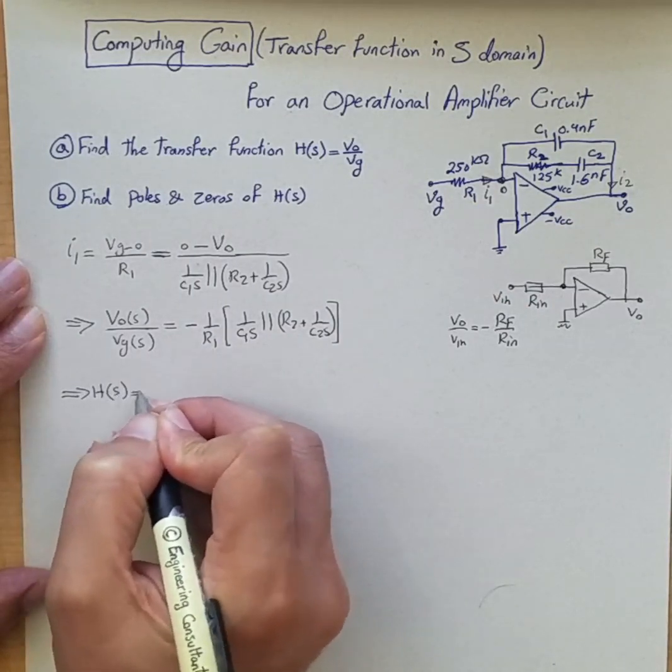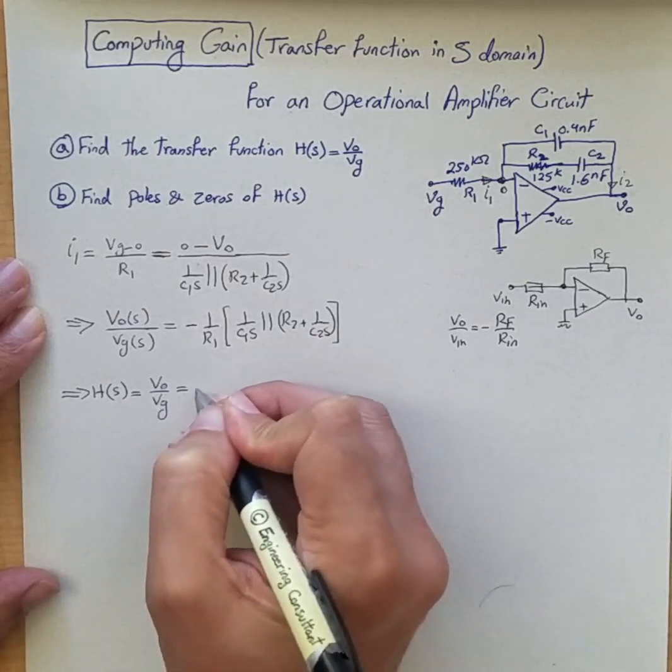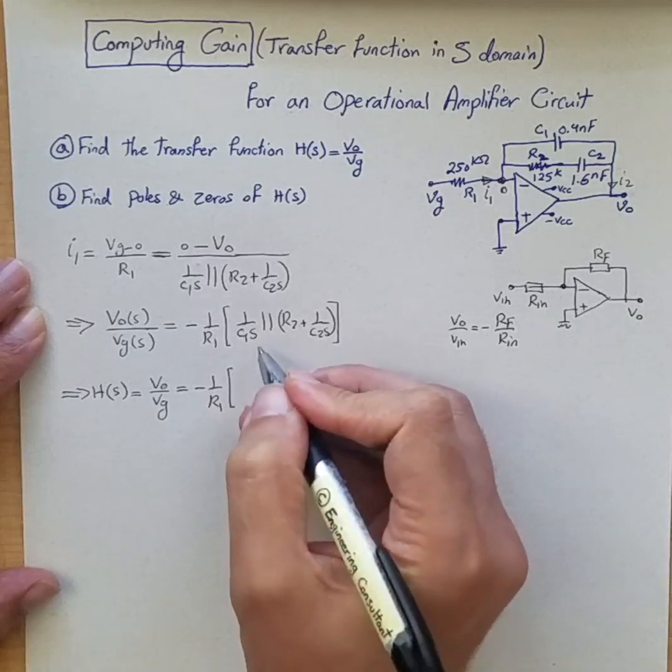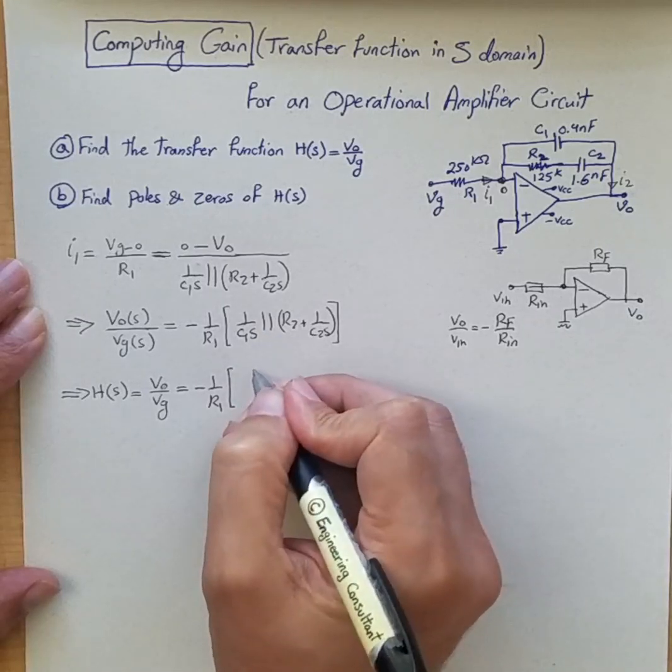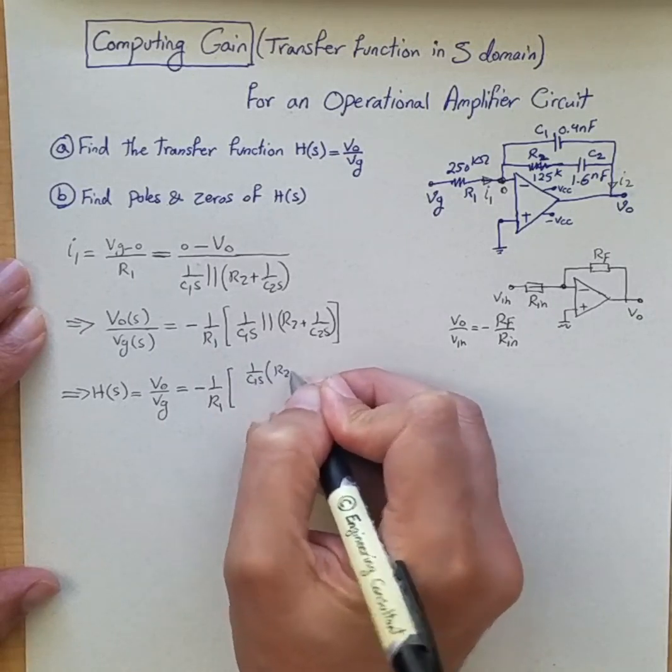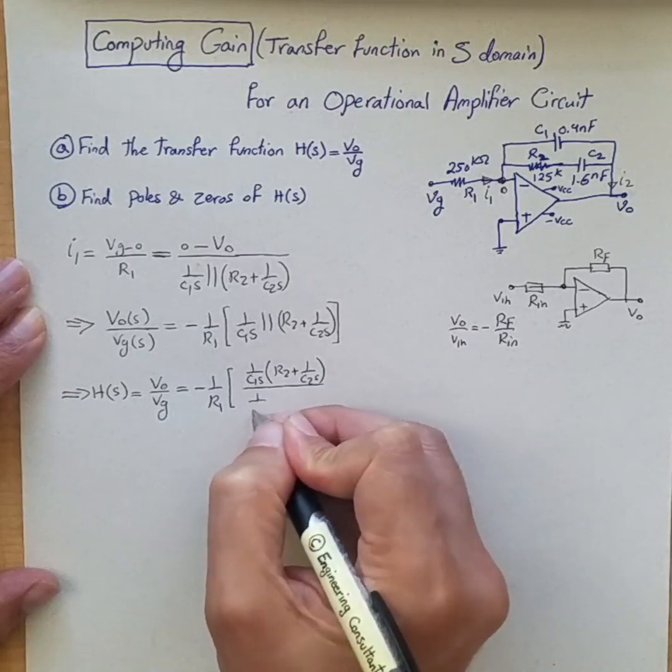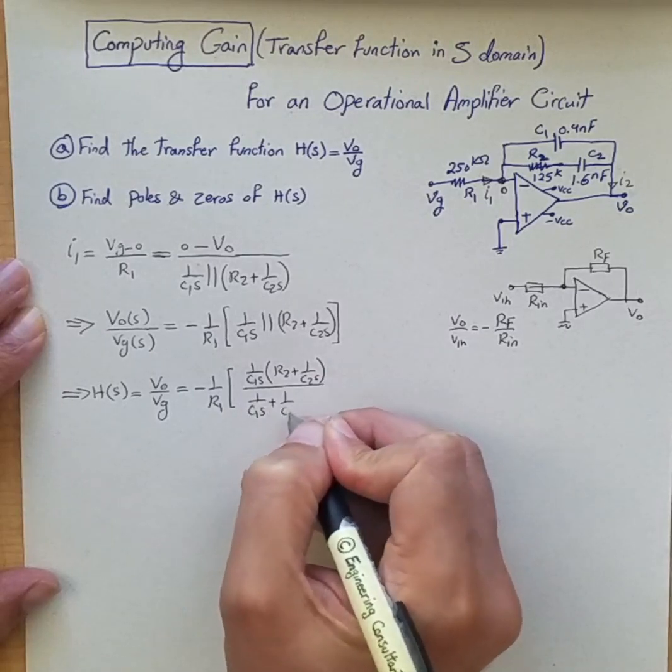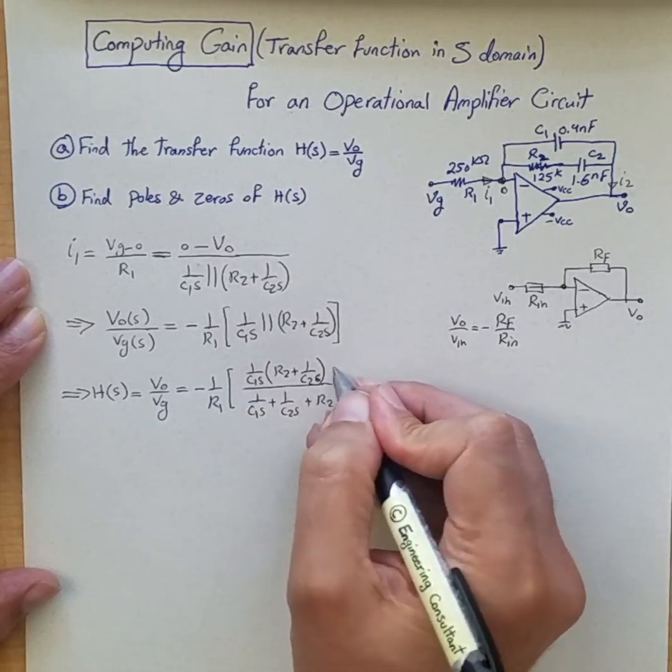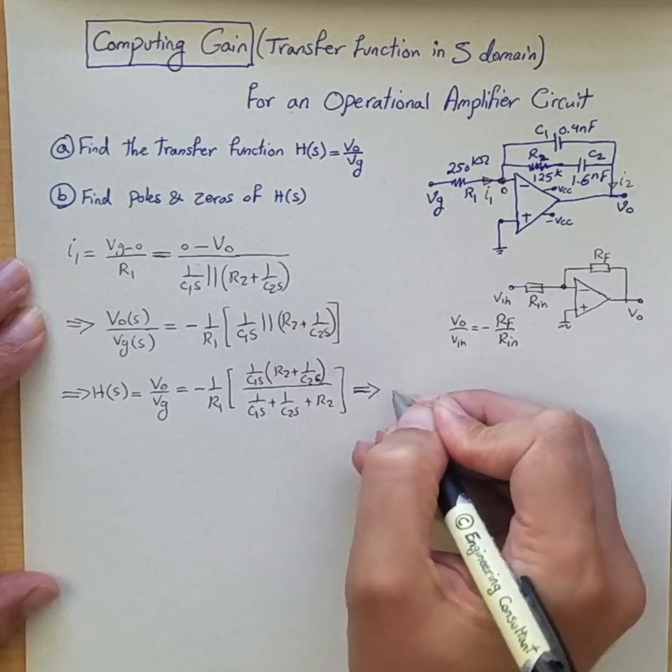Right in the KCL at the negative terminal or inverting terminal. And therefore what we can write is the H of S, the transfer function that we are interested, is Vo over Vg is minus 1 over R1, and then for this one we have 1 over C1 S R2 plus 1 over C2 S divide by 1 over C1 S plus 1 over C2 S plus R2.